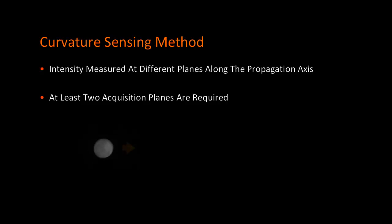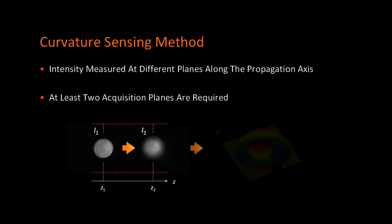Curvature sensing technique consists of analyzing differences of intensity in two or more image planes along the propagation axis.